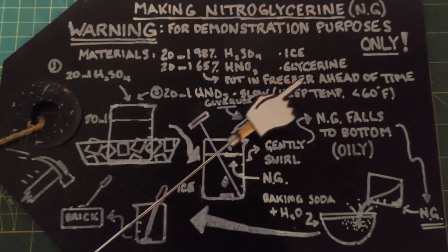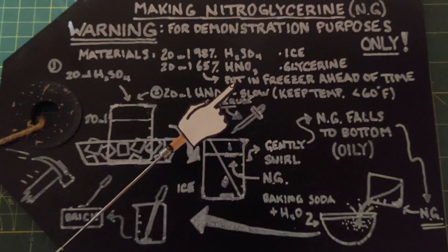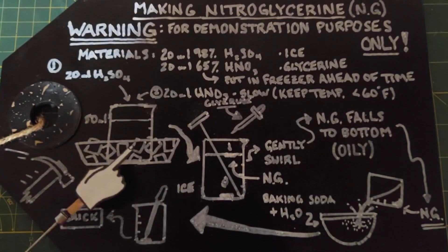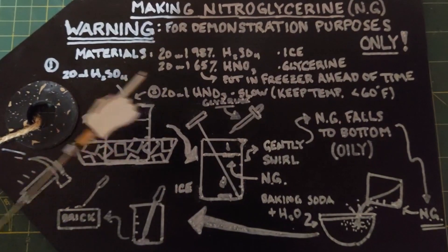We are going to be putting both of these in the freezer ahead of time to make sure they are as cold as possible. We are going to start this process by putting a 50 milliliter beaker in some ice.